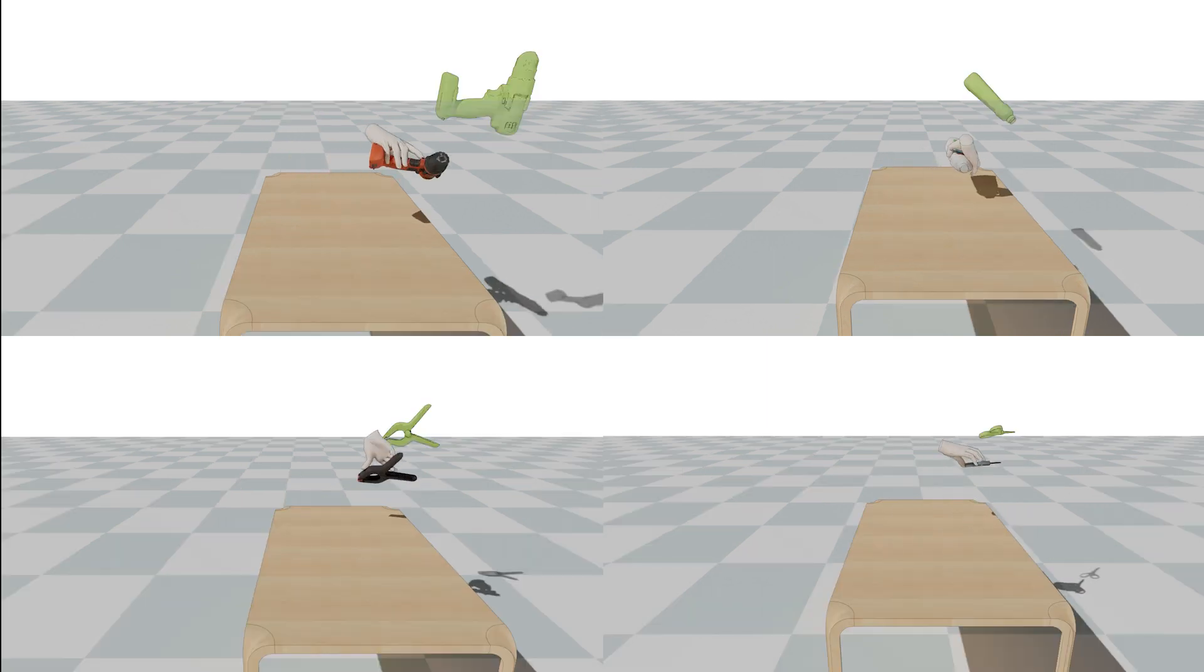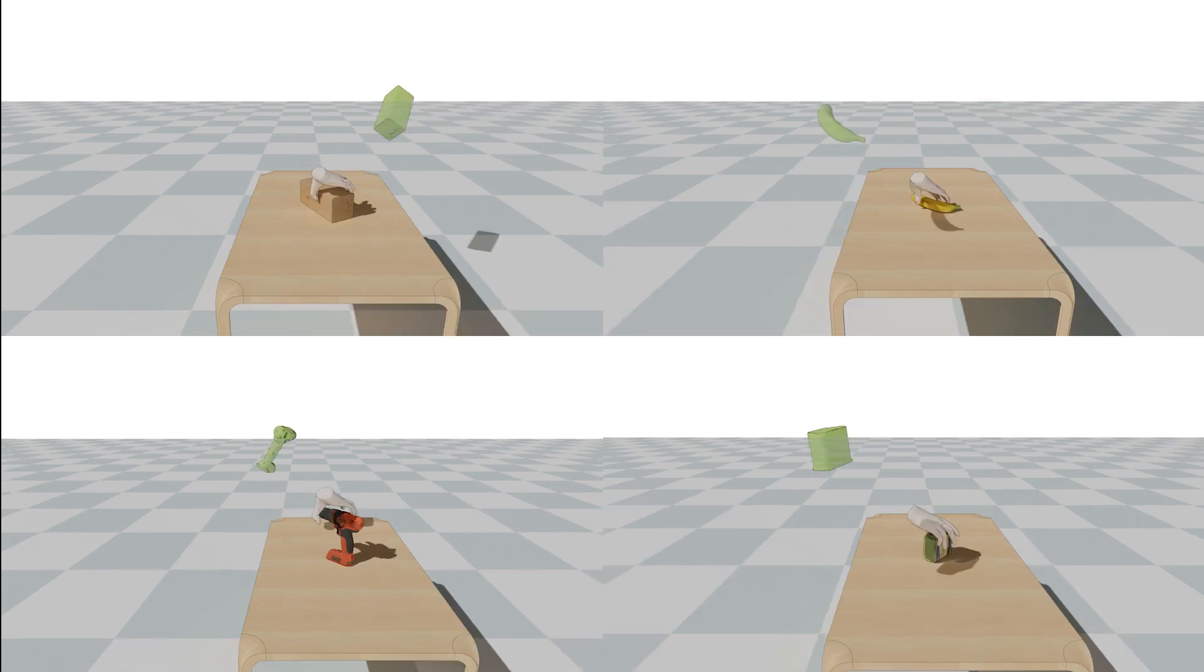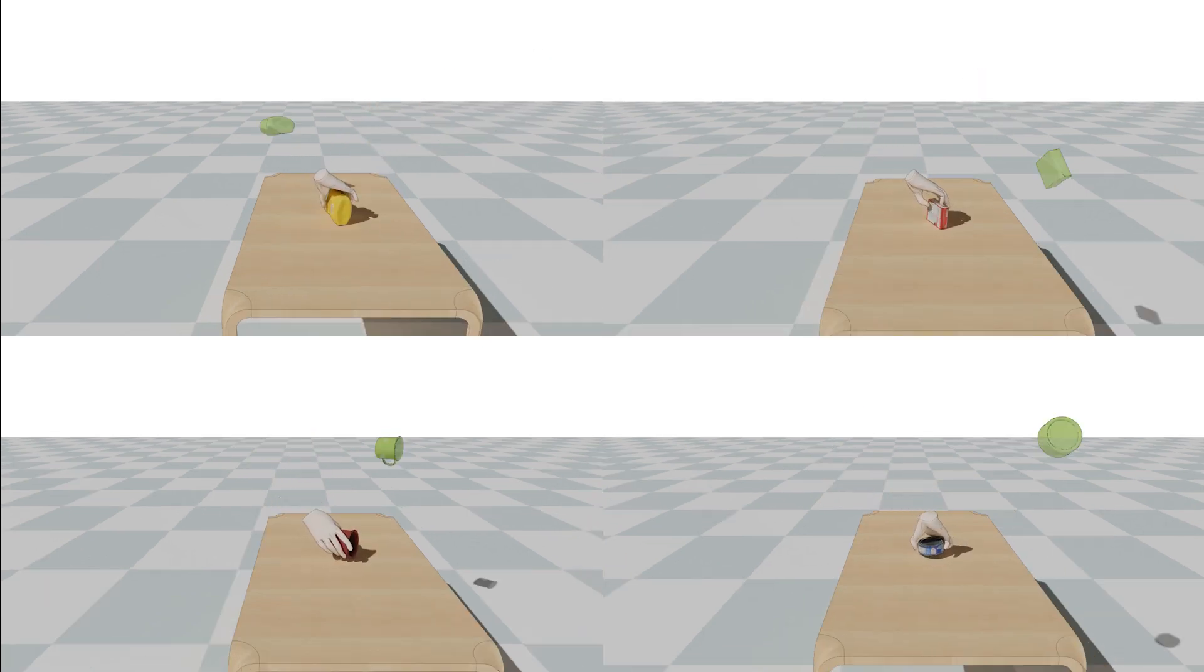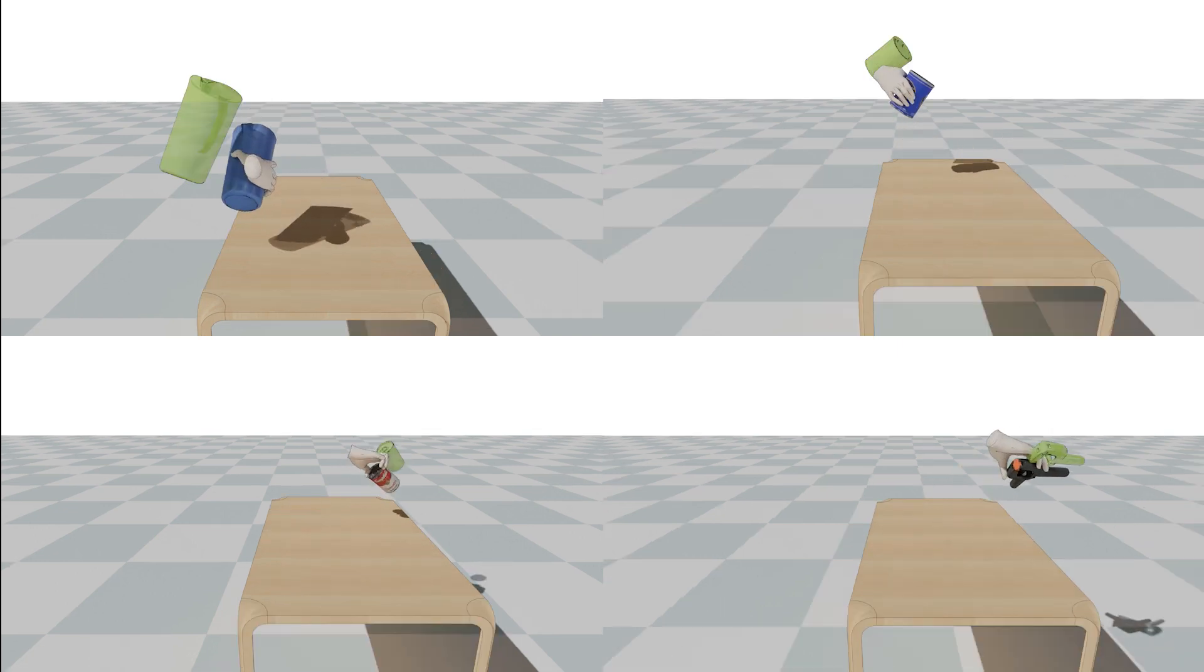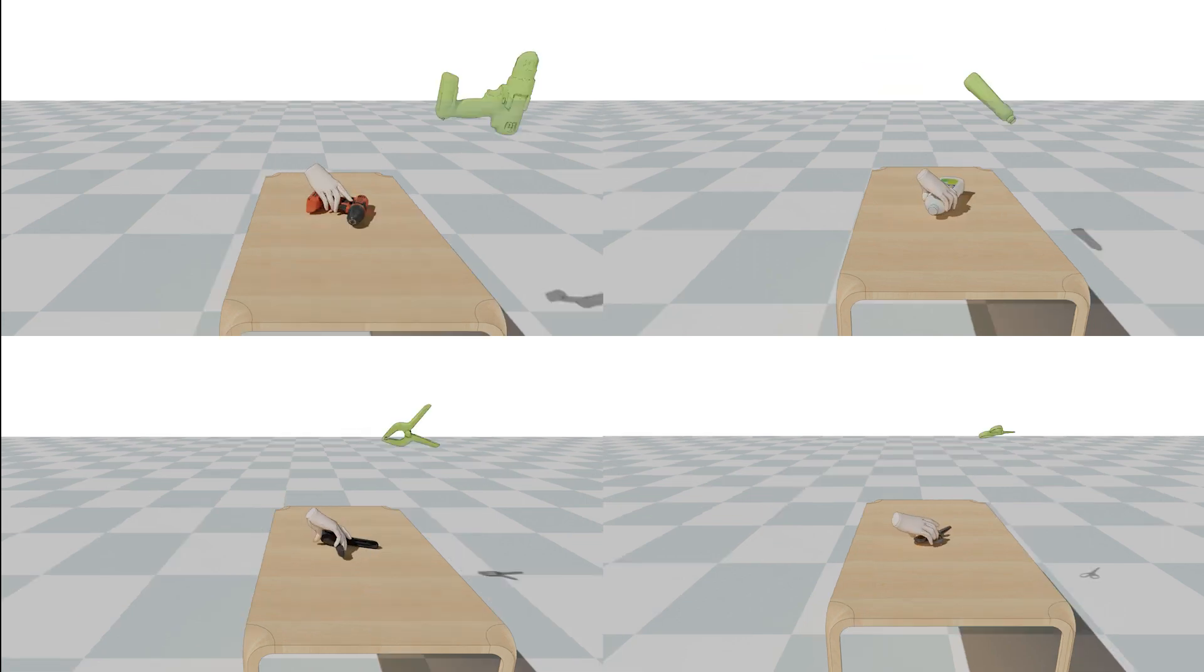In summary, we introduce the task of dynamic grasp synthesis for human-object interactions. We leverage a physics simulation and learn to generate physically plausible grasping sequences. We propose a reinforcement learning-based solution that learns from a single external grasp label.